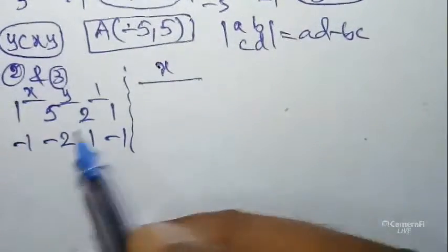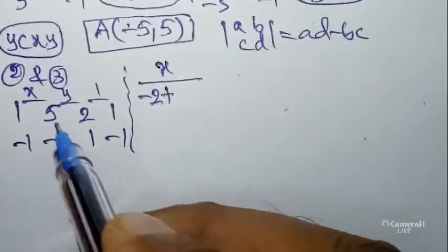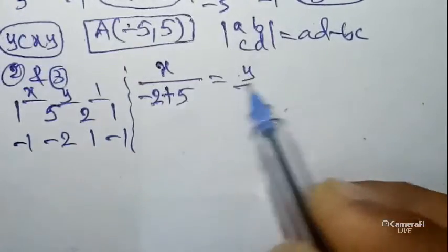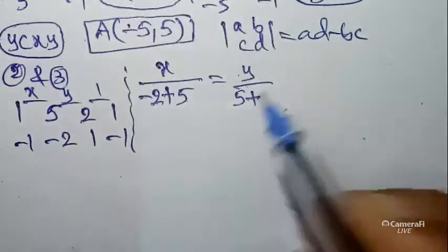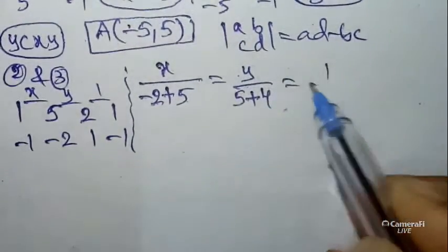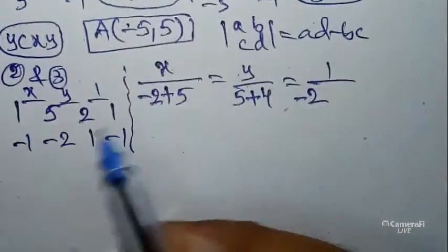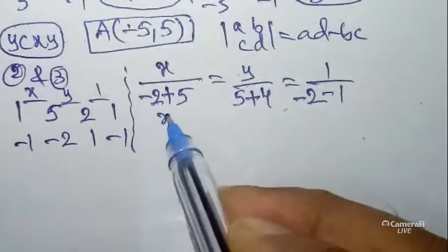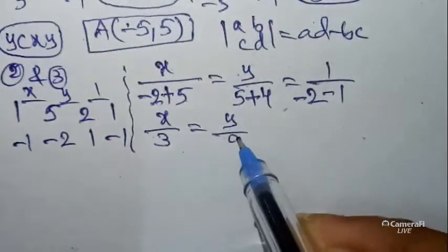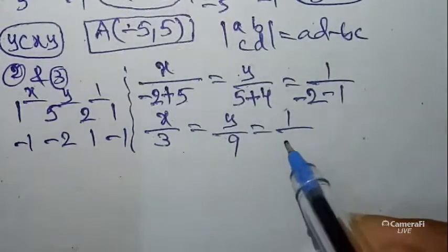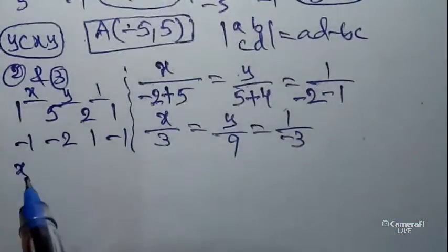So: x divided by (1×(-2) - (-1)×5) = x/(−2 + 5) = x/3. Equals y divided by (5×1 - (-2)×2) = y/(5 + 4) = y/9. Equals 1 divided by (1×(-1) - 1×2) = 1/(-2 - 1) = 1/(-3). So x/3 = y/9 = 1/(-3).